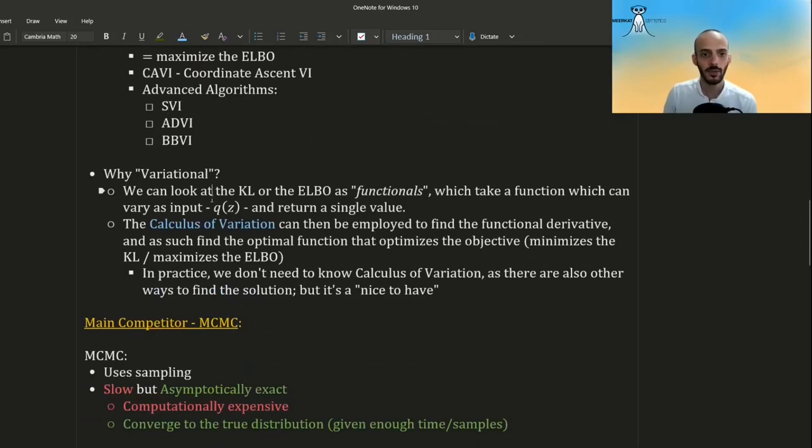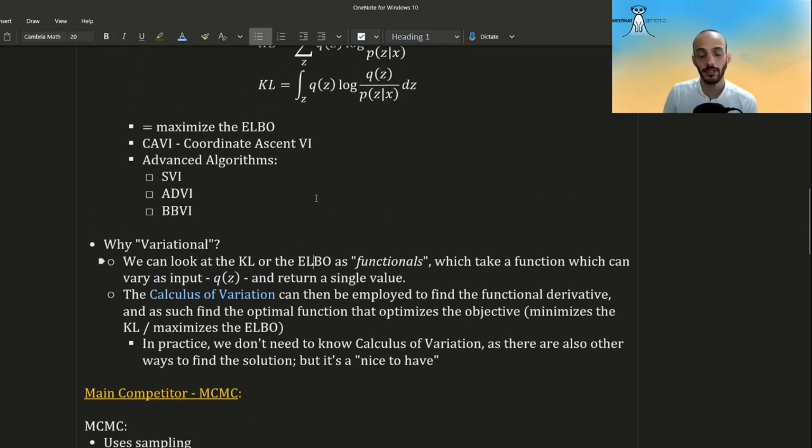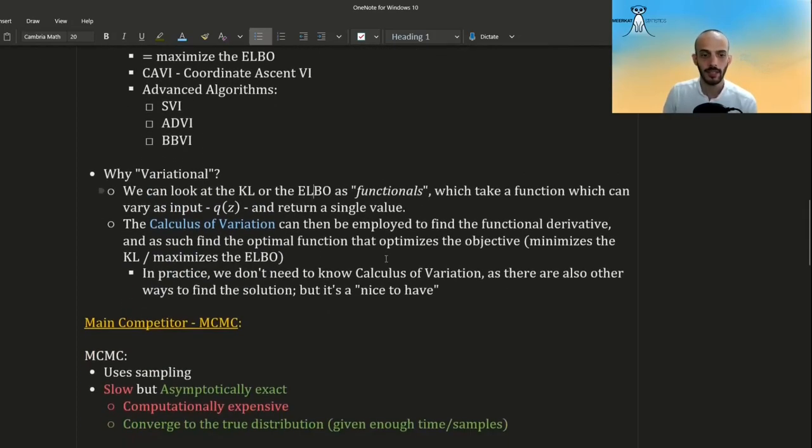Why is it called variational? Well, the KL or the ELBO are functionals. They take in a function, a distribution function, and they return a single value. So the calculus of variation is concerned with how do you optimize functionals. So how do you optimize this objective with regards to a function? And in practice, we actually don't really need the calculus of variation, as we will see, there's other ways to arrive at the solution, but it's also nice to have and know. And in any case, this is what gives the V in variational inference.